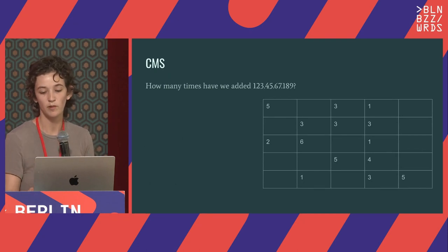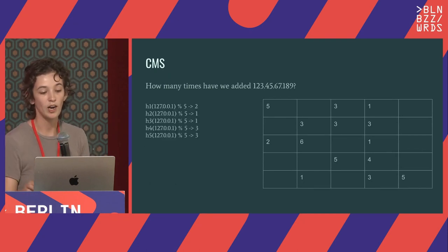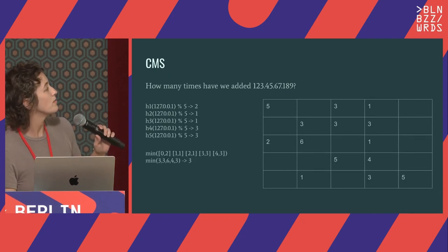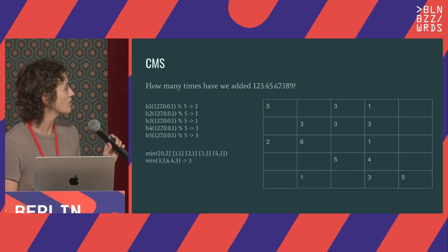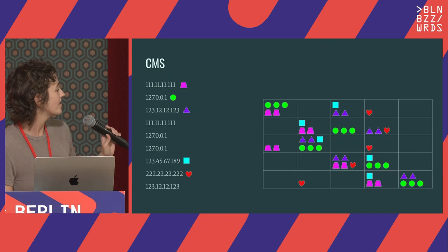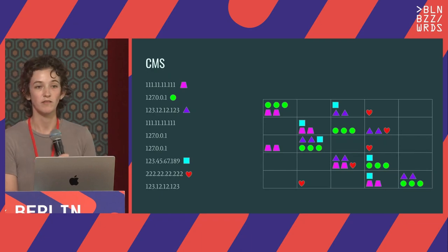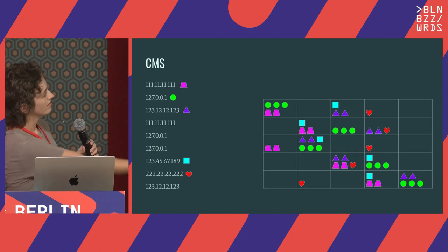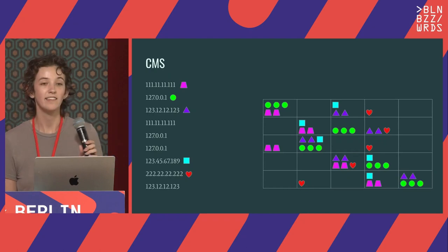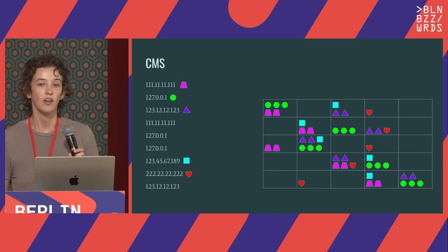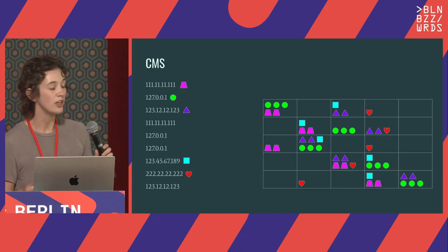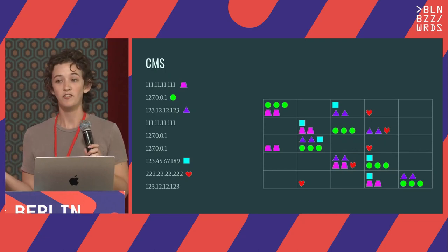For example, we might say we've added this random IP address three times when really we only added it once. In my representation of a Count-Min Sketch, there is no box that has that blue square by itself — everything has had a collision. You can have hashed different things, added them to the same box, and then have them be counted together. So you can over-count, which is why when you look at all these different numbers, you take the minimum and say 'this is the best guess I have.'